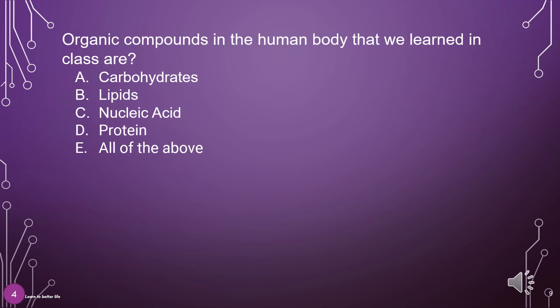Organic compounds in the human body that we learned in class are: Carbohydrates, Lipids, Nucleic acid, Protein, or all of the above. The answer is E: All of the above.